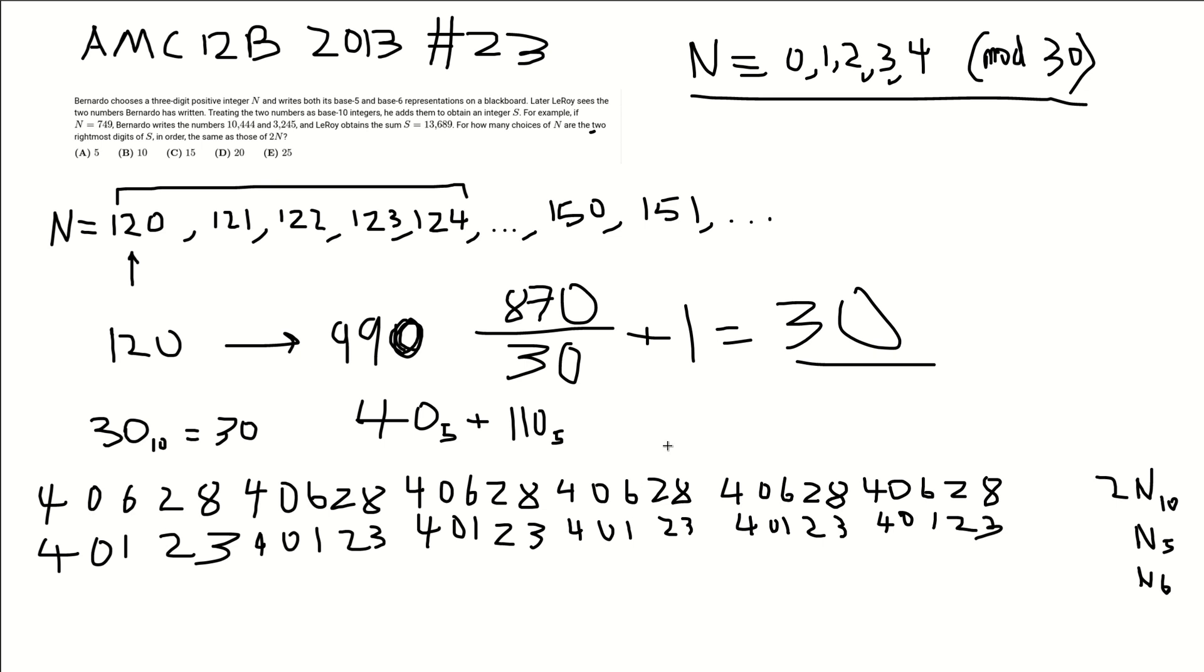Right, and then we can do a very similar thing looking at the tens digit in base 6. So, 120 in base 6 is going to be 2, 0, base 6 something. And then now we're going to want to add 30 in base 6. And 30 in base 6 is going to be 50. And then because we're adding the tens digit under mod 6, adding 5 is the same as subtracting 1. So, we're starting from 2 and we're subtracting 1. And then once again, this becomes pretty simple to list out. We just have the pattern 210543 repeated 5 times.